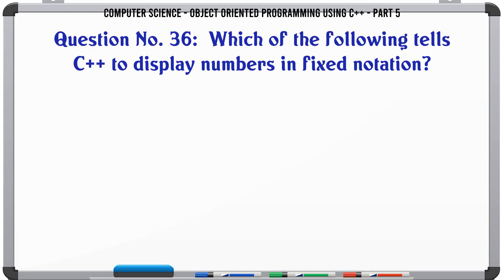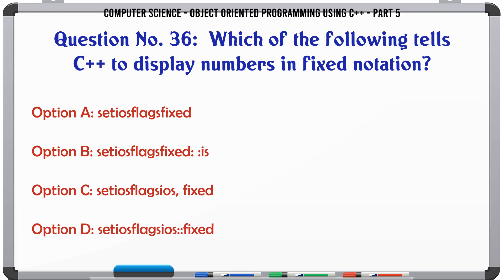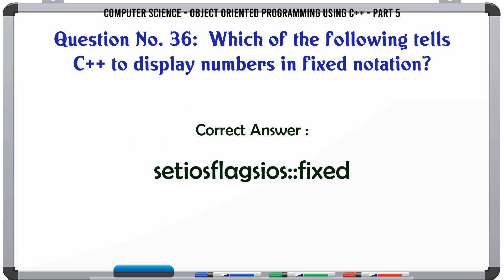Which of the following tells C++ to display numbers in fixed notation? A. setiosflags(fixed). B. setiosflags(fixed =). C. setiosflags(ios::fixed). D. setiosflags(ios::fixed). The correct answer is: setiosflags(ios::fixed).